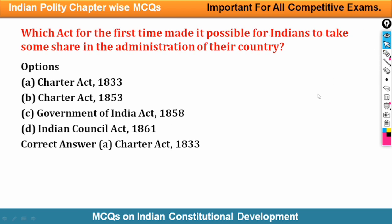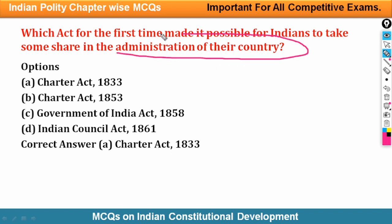Next question: Which act for the first time made it possible for Indians to take a share in the administration of their country? After which act did the people of India also become eligible to be part of the administration of the country? The answer is Charter Act 1833.